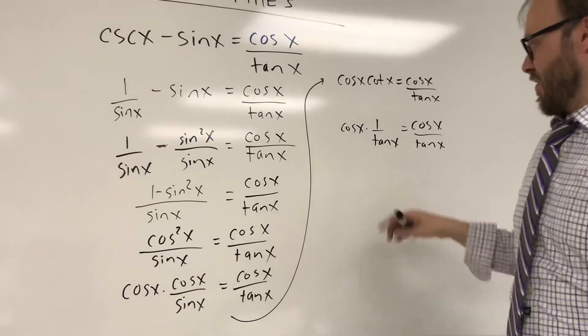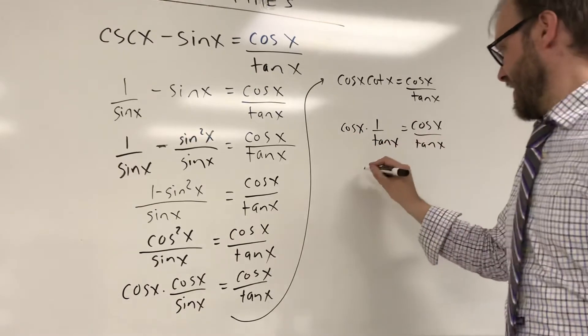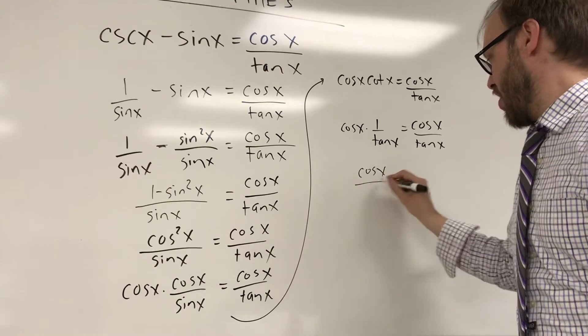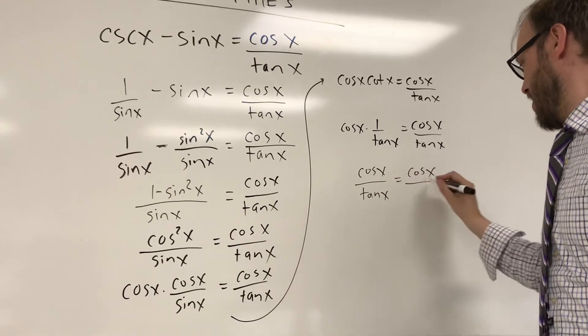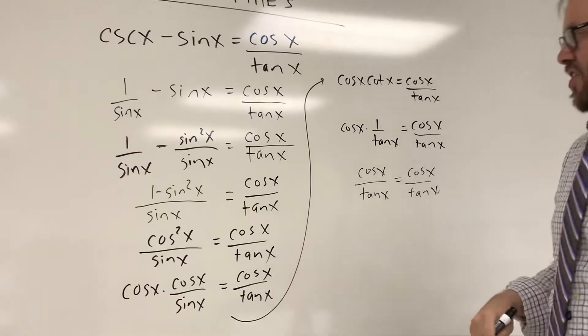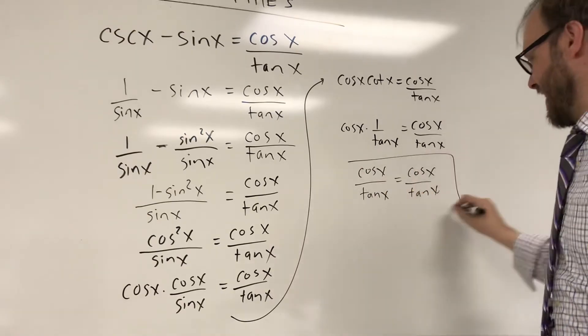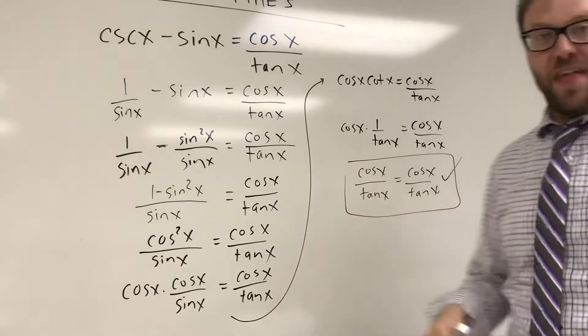And of course that's cosine of x over 1 times 1 over tangent. That's going to give me cosine of x over tangent of x is equal to cosine of x over tangent of x. So I have transformed the left-hand side into the right-hand side. At that point I'm done. I've verified that identity.